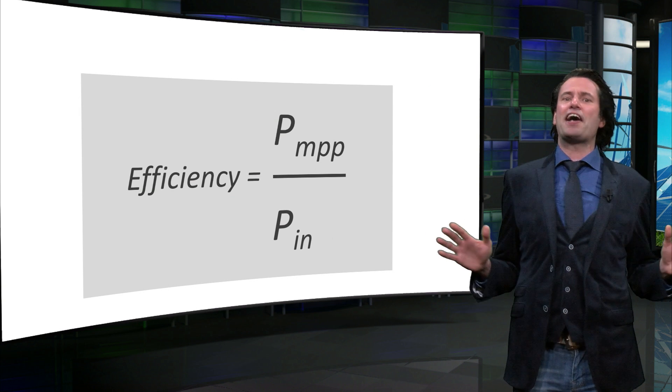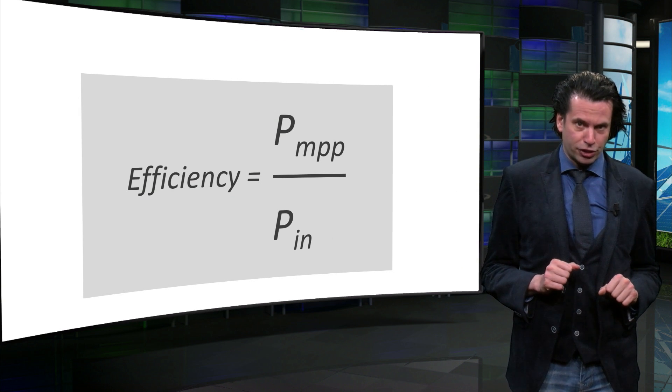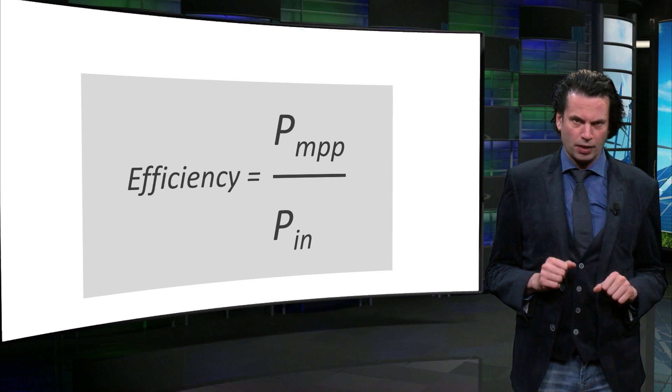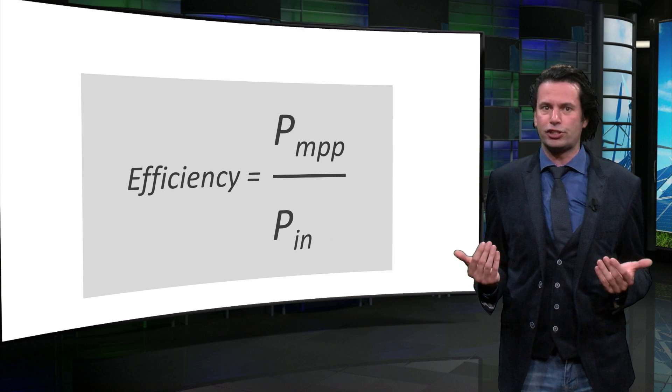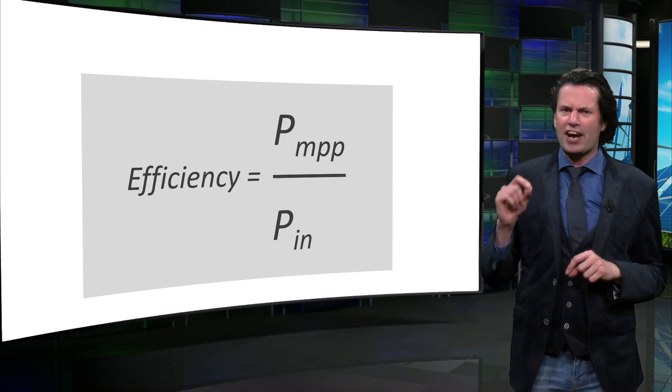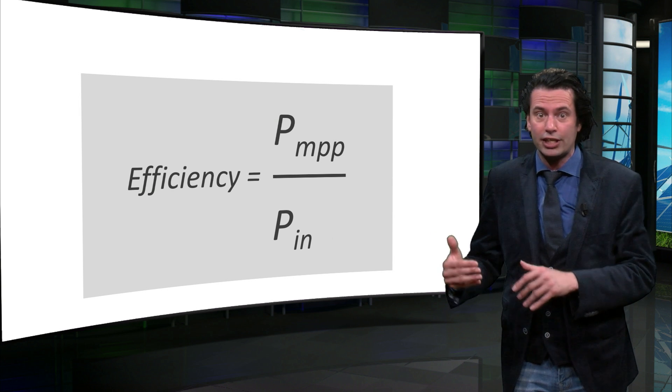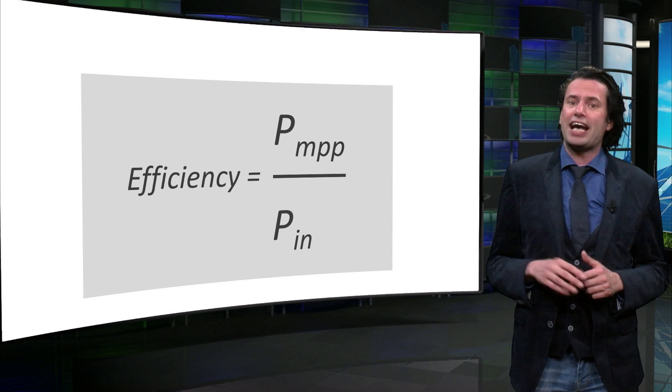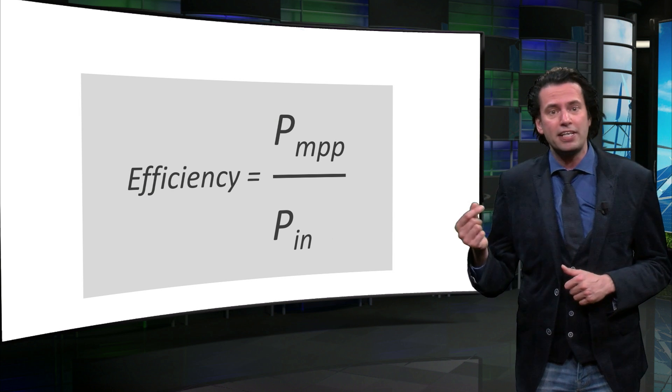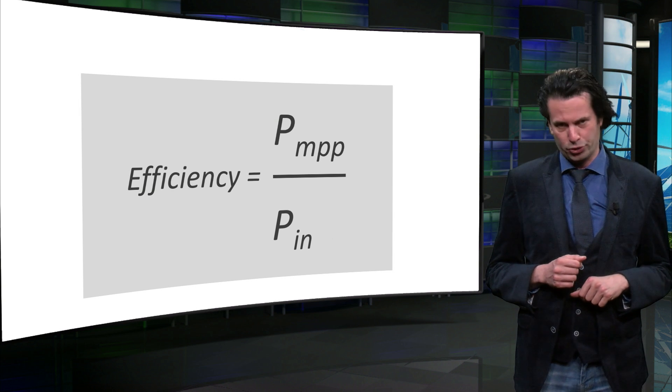Finally, people often use the term conversion efficiencies of a solar cell. People refer then to the solar to electricity conversion efficiency, or in other words, the fraction of energy in the solar light incident on the solar module that is converted into electrical energy. The efficiency is therefore calculated as the maximum power point divided by the total power of the light that is incident on the solar module.